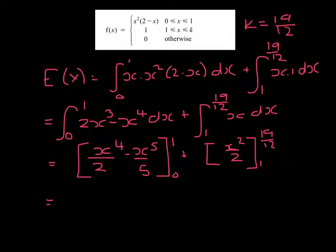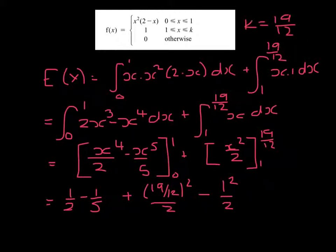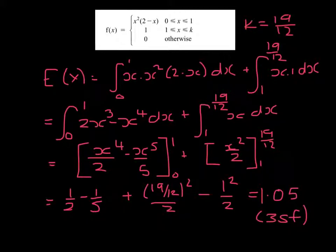So the answer to this is going to be a half take away a fifth, and if I substitute in 0 I get nothing, plus 19 over 12 squared all over 2 minus 1 squared over 2. And when I type that into the calculator, I get 1.05, and that answer is to 3 significant figures.